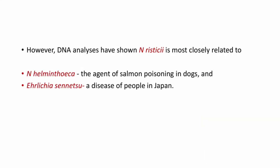However, DNA analysis has shown Neorickettsia risticii is most closely related to Neorickettsia helminthoeca, the agent of salmon poisoning in dogs, and Ehrlichia sennetsu, a disease of people in Japan.